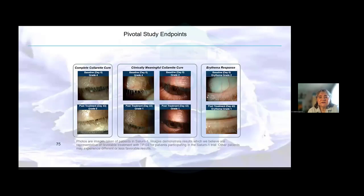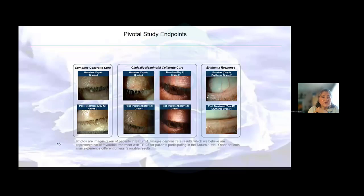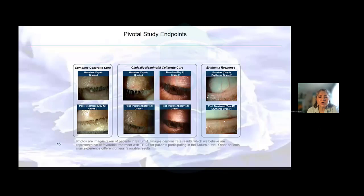Here is a slide from one of the clinical trials. On top we have some pretreatment — before the medication — and you can see the spiny, spiky type blepharitis. Clinical endpoints included complete collarette cure — going from grade four collarettes to grade zero — or clinically meaningful collarette cure, translating that into the mite count: grade four to grade one, or grade two to grade one. What I think is most exciting for patients — not only the clinician — is a reduction in redness along the lid margin, from greater than grade two to grade one. It looks clearer, sharper, and healthier.